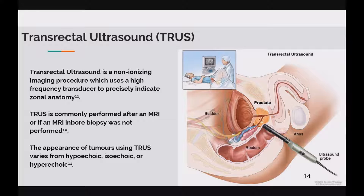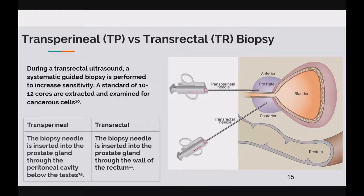Transrectal ultrasound is a non-ionising imaging procedure which uses a high-frequency transducer to precisely indicate zonal anatomy. The appearance of tumours using TRUS varies from hypoechoic, isoechoic and hyperechoic. TRUS is commonly performed after an MRI or if an MRI-guided biopsy was not performed. During a transrectal ultrasound, a systematic guided biopsy is performed to increase sensitivity, with a standard of 10 to 12 cores extracted and examined for cancerous cells. A transperineal approach involves a biopsy inserted into the perineum below the testes, while a transrectal approach inserts the biopsy through the rectum wall.